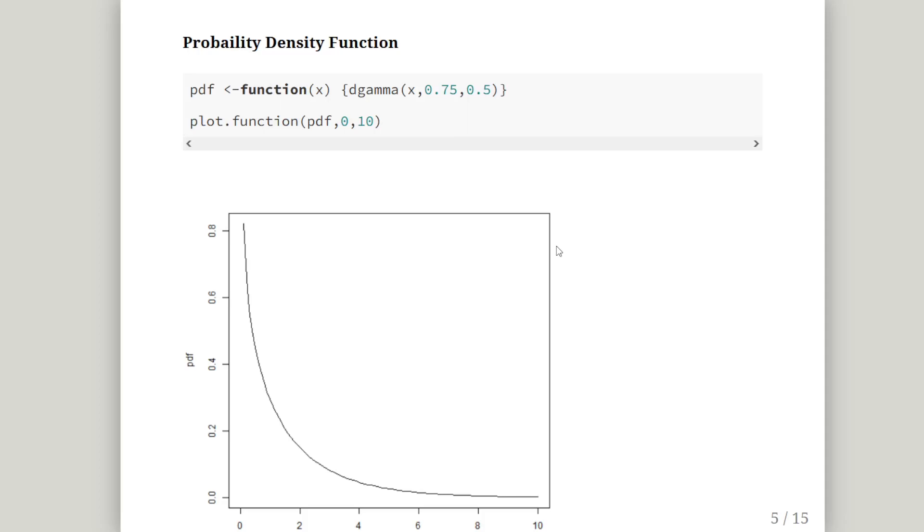Exercise one. We'll build this up in parts. We'll start off with the probability density function and work our way up. D gamma is the density function of the gamma distribution. X is the name of the function argument. 0.75 and 0.5 are alpha and lambda, the shape and scale parameters. We're going to set that up as a function called PDF.